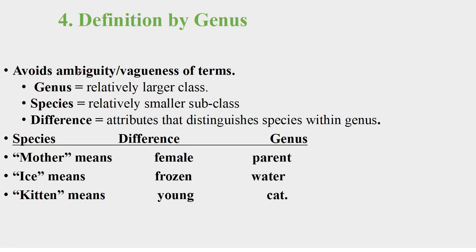We have the intentional definition technique: definition by genus. The genus is the relatively large class, the species is a relatively smaller subclass, and the specific difference is an attribute that distinguishes the species within the genus.